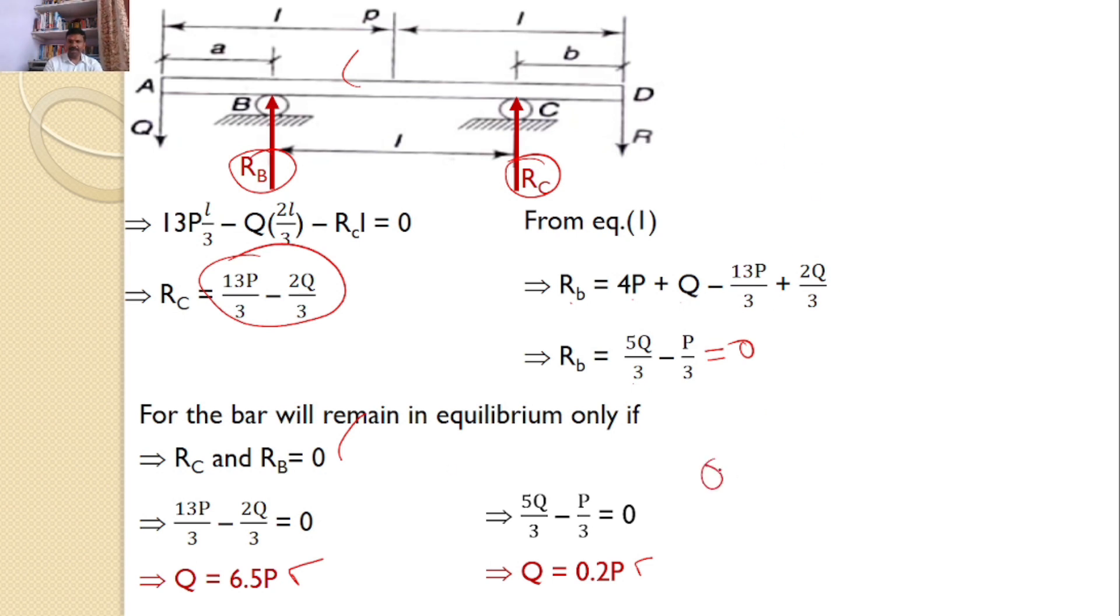The Q value must be within the limits of 0.2P to 6.5P. That means 0.2P must be less than Q and Q must be less than 6.5P.